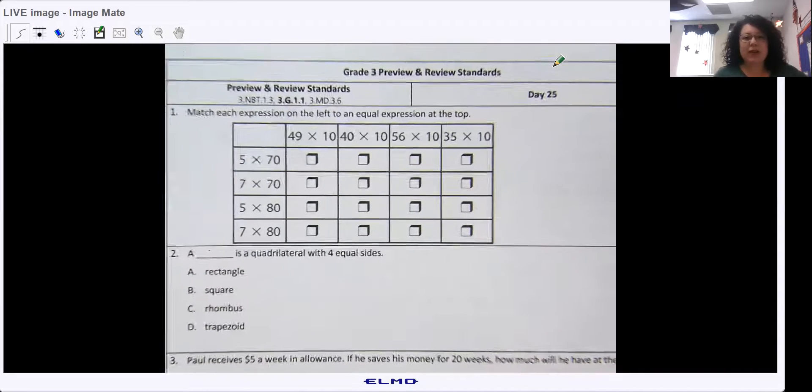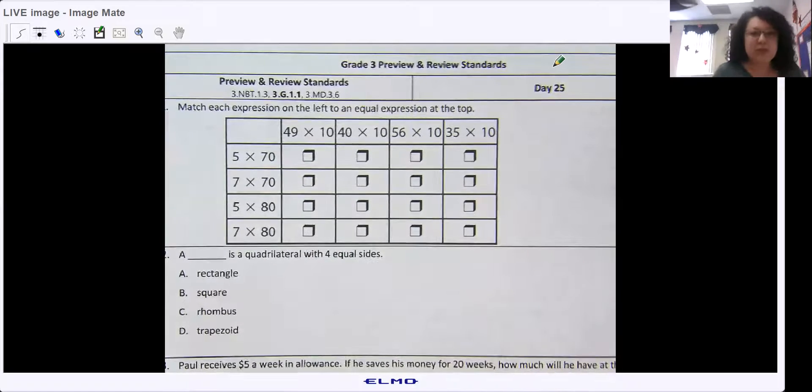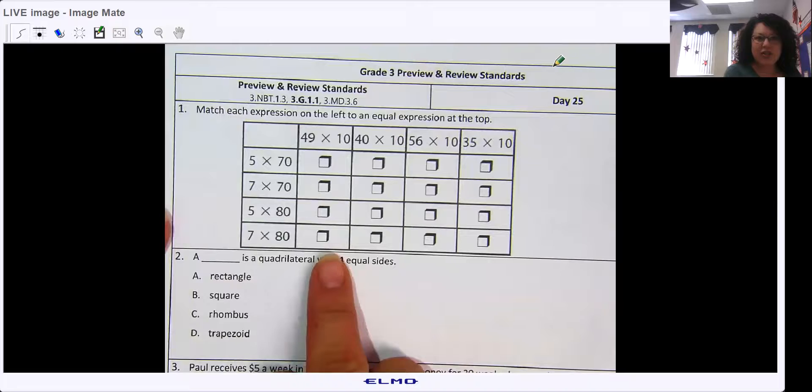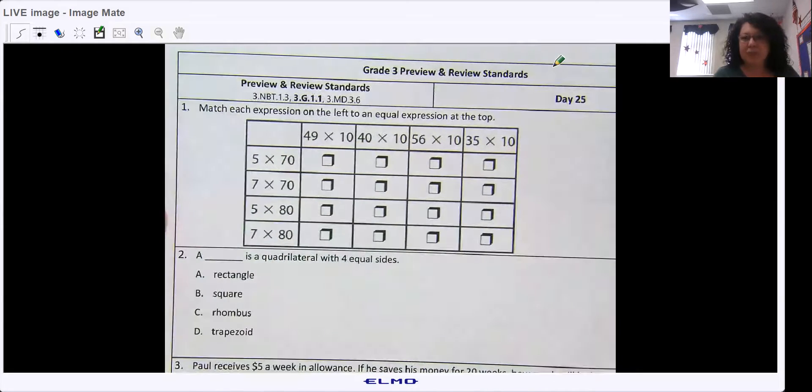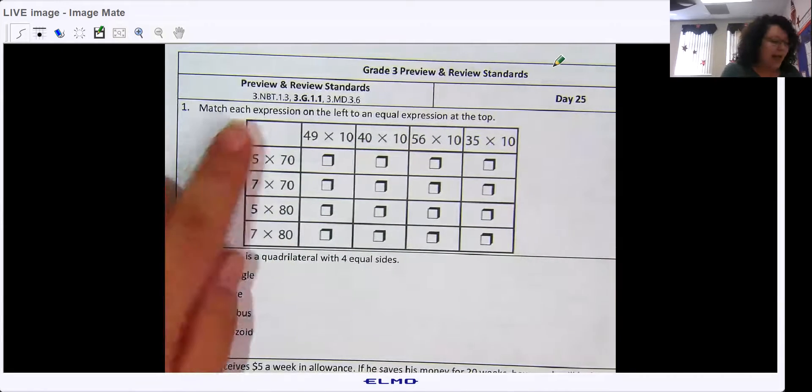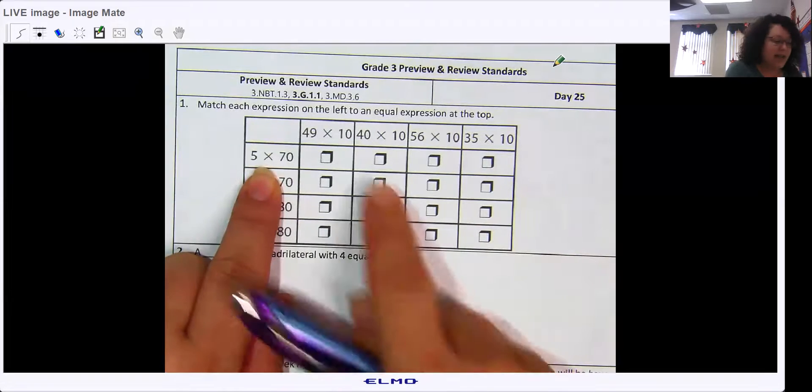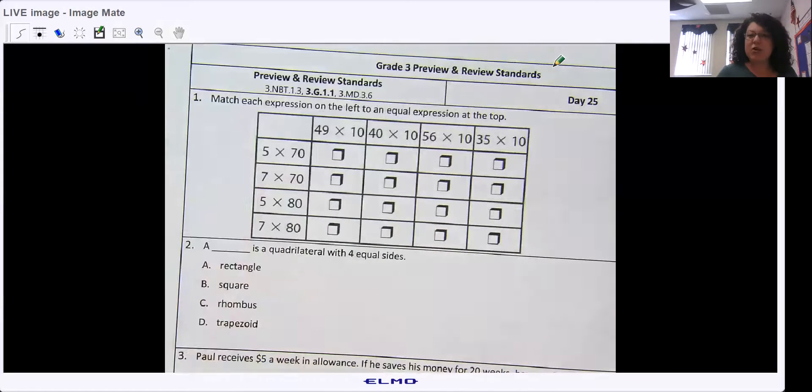All right, this is similar to what we did yesterday, that one problem I showed you how to do the graph or the grid. So you do need to solve all the problems first. It says match each expression on the left to an equal expression at the top. So I need to find one of these problems at the top to match 5 times 70. I need to find another problem up here that has the same answer. So you have to solve them all.